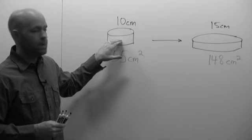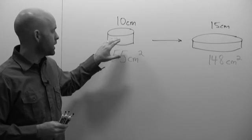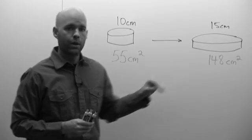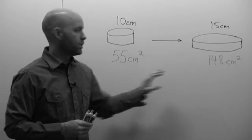And so by keeping the same number of cells, if we transferred all the cells from our 10 centimeter to our 15 centimeter, we'd effectively get a 1 to 3 split.